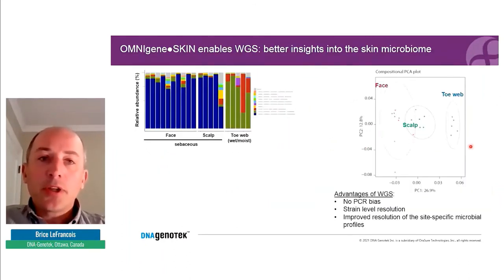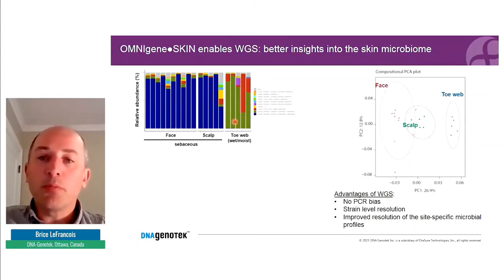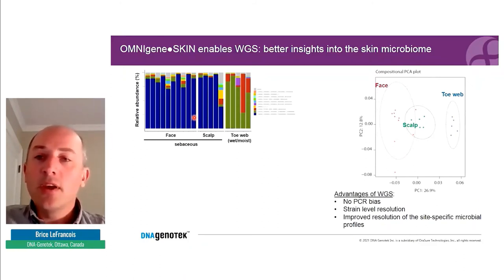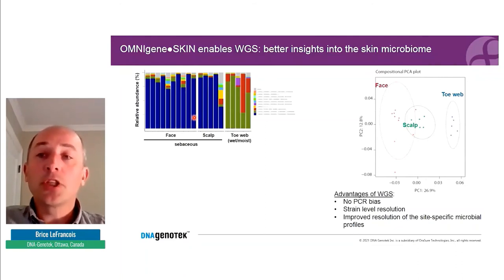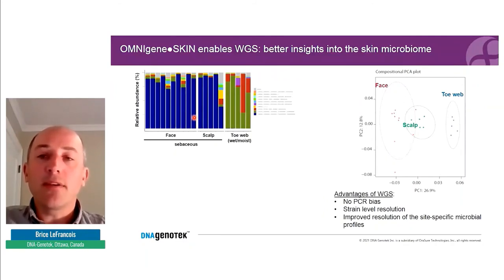Some of the shotgun data was generated in collaboration with our sister company Diversigen. Face, scalp, and forearm samples show similar profiles to what we saw with 16S amplicon sequencing — sebaceous skin sites, face and scalp, are dominated by Cutibacterium, as expected. What's interesting is the much higher relative abundance of Cutibacterium in shotgun data compared to amplicon sequencing, and I think this is tied to the absence of PCR bias. Shotgun data gives a better representation of the true relative abundance of bacteria on the skin.